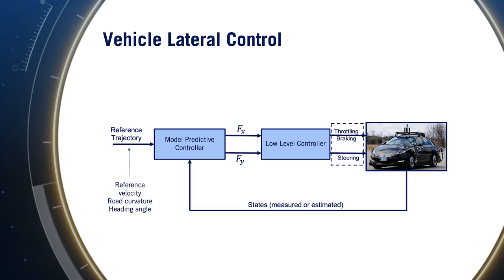The inputs to the MPC block are the reference trajectory, which includes the reference path and velocity, as well as the vehicle states at each time step. The outputs of the MPC block are the lateral and longitudinal forces needed to follow the desired trajectory. These forces are then translated into throttle, braking, and steering commands as the output of the low-level controller. Finally, the actuation signals are applied to the vehicle at each time step, and a new vehicle state is achieved, closing the feedback loop.